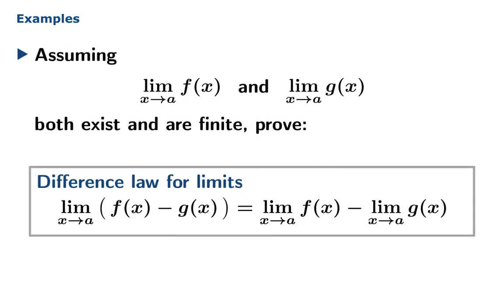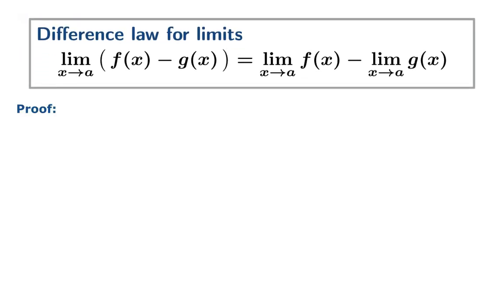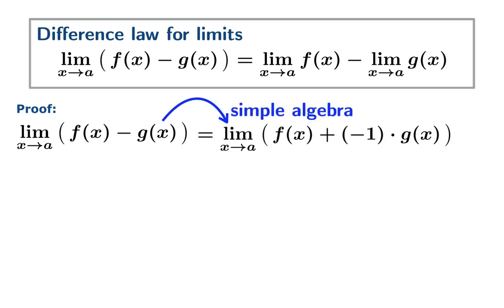Assuming the limits of f and g as x approaches a both exist and are finite, prove the difference law for limits. In other words, the limit of a difference is the difference of the limits. This looks like it's possibly a new law that would require some sort of fancy geometric proof. But actually, let's get leverage from the tools we've already developed. The key to this is the simple observation that the difference of two things is simply the sum of the first thing plus negative 1 times the second thing.